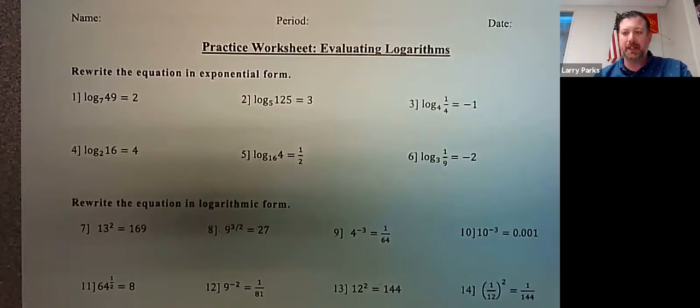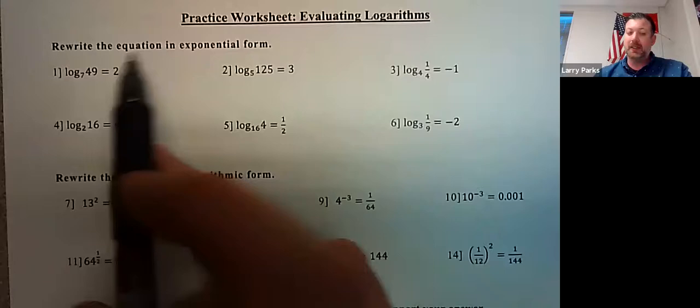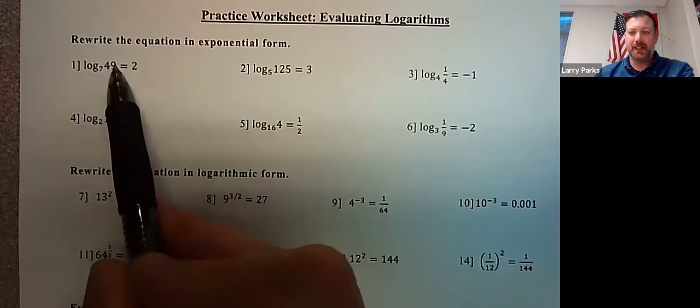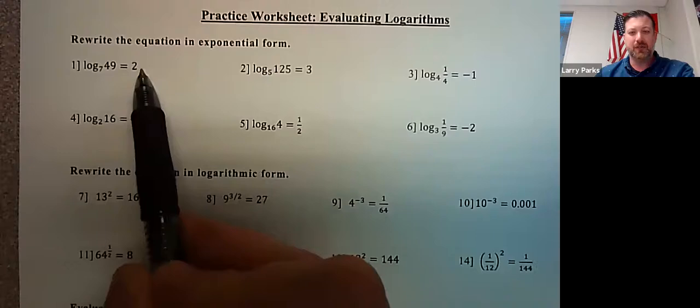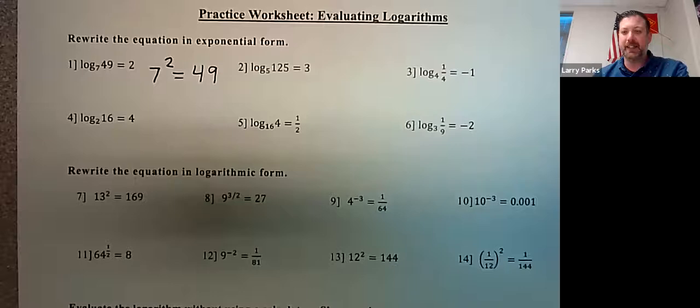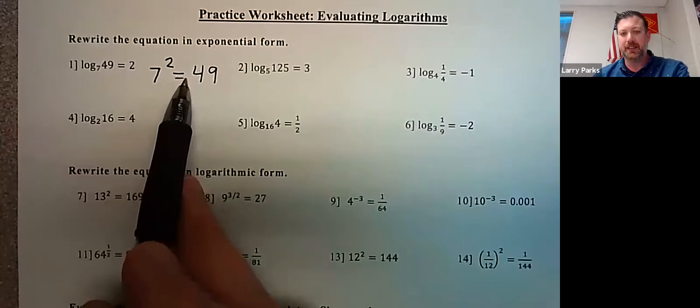Here's your practice. For problems 1 through 6, rewrite each equation in exponential form. These are in log form, so using base-answer-exponent: log base 7 of 49 equals 2 means 7 to the second is 49. Rewrite it as 7 squared equals 49. You're not solving anything — just changing from log form to exponential form.